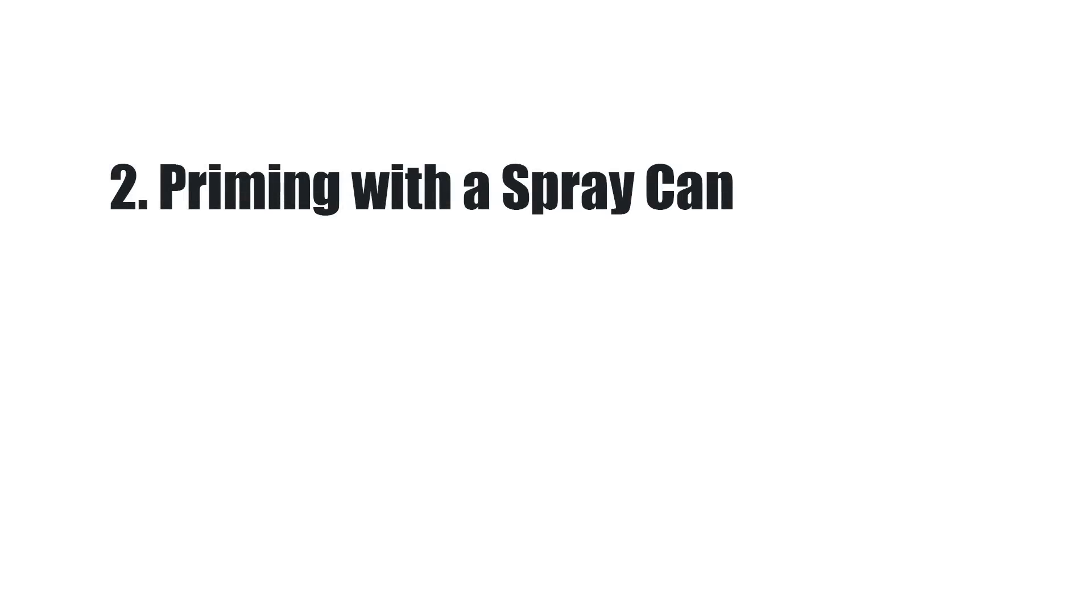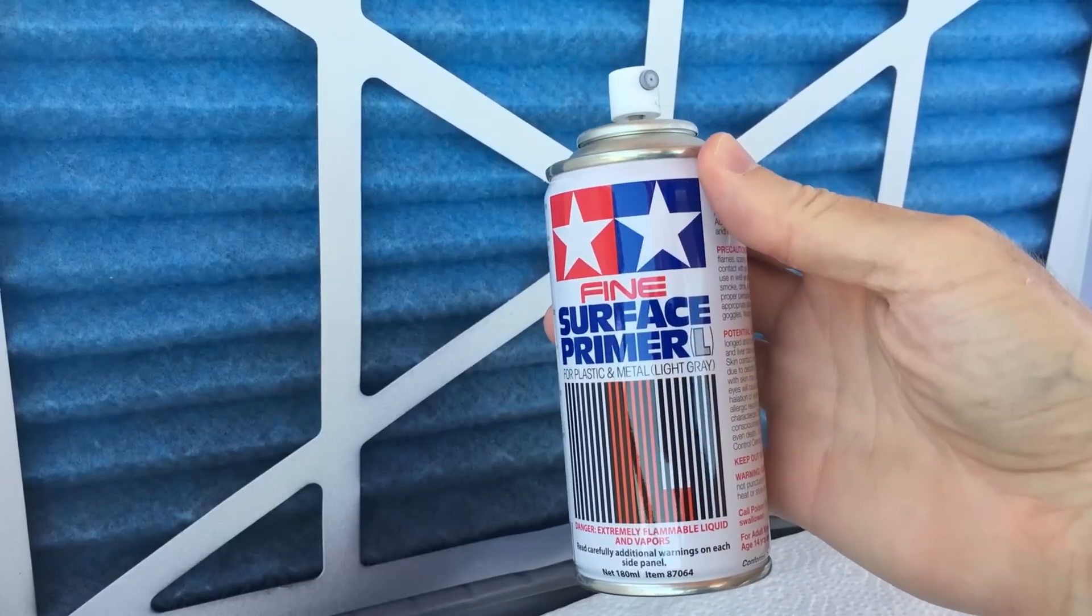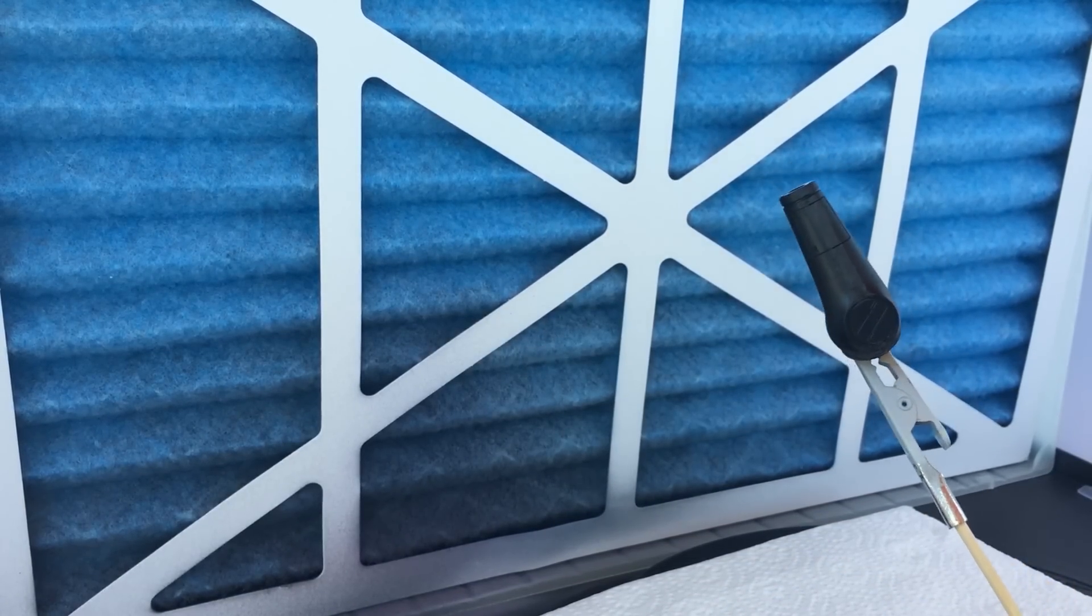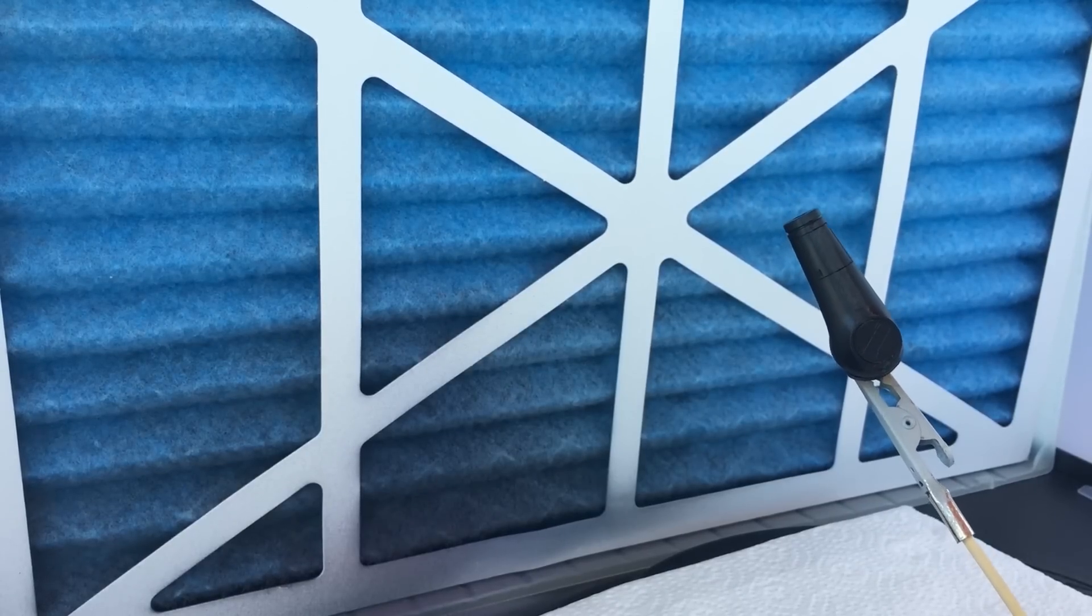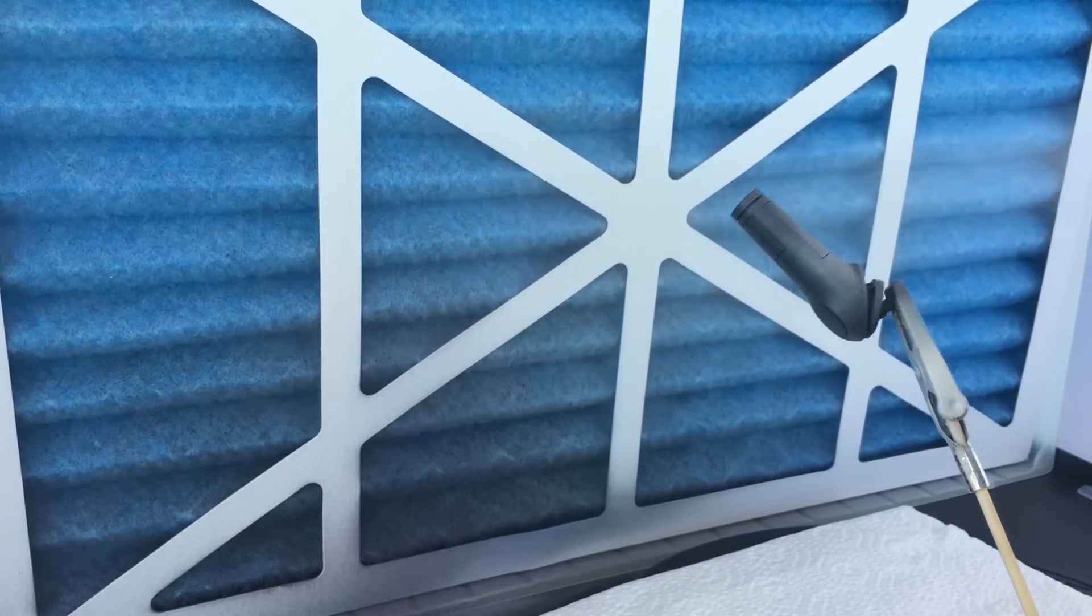Next step, priming with the spray can. Here I am using one of my favorites, it's a Tamiya Fine Surface Primer. And the reason I like this one so much is that it's both for plastic and metal. Some of them don't have a metal etching component in them, and this makes it really easy, you just need the one, right?